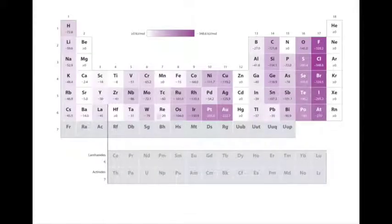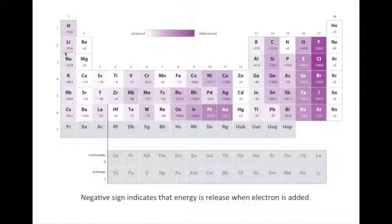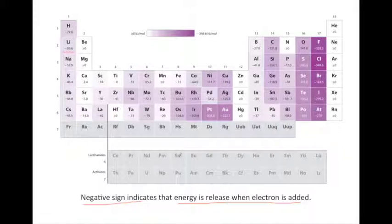Here's a table which shows the electron affinities for most of the atoms on our periodic table. One thing I want to point out is that these values tend to be negative. The negative sign does not mean that the energies are less than zero — the negative sign indicates that energy is released when the electron is added. A positive value means energy is absorbed in the process.